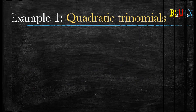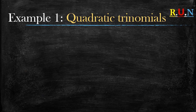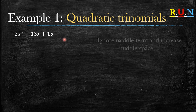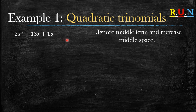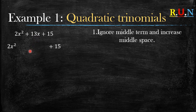Example number one: what do you do when you're given a question like this and told to factorize? Rule number one: ignore the middle term and increase the middle space. In this instance our middle term is 13x, so we ignore the 13x and increase the middle space like this.